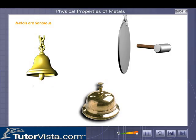Sonorous: metals are sonorous, meaning they produce a loud, full, or deep resonant sound when struck. Many metals produce a specific ringing sound when struck, and due to this property they are used to make bells and gongs.